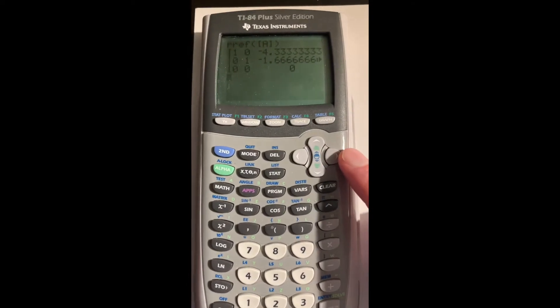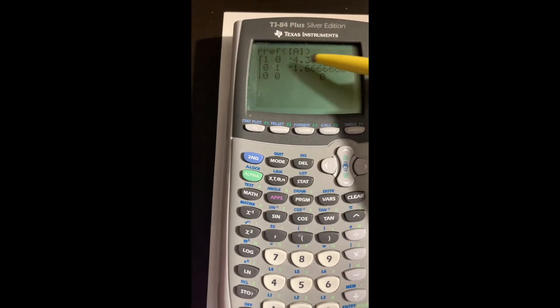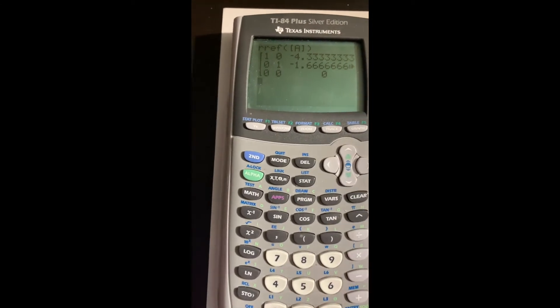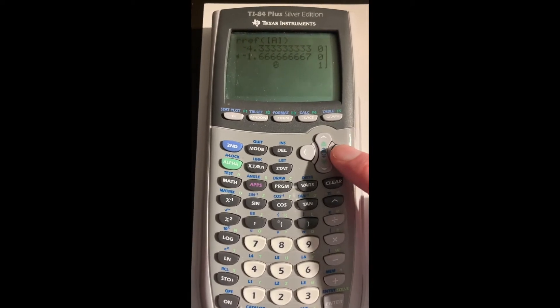It doesn't fit all on the screen here. We can see column 1, column 2, column 3, but remember this is a 3x4 matrix. If we hit the right arrow, we can scroll to the right and see that last column.